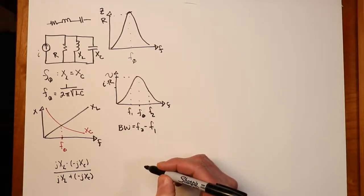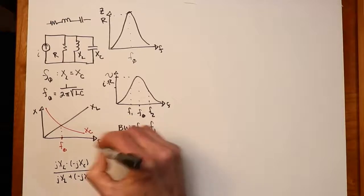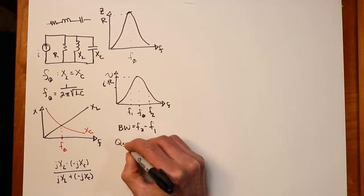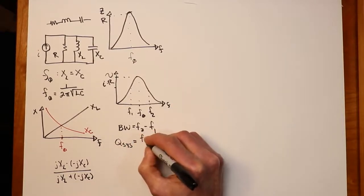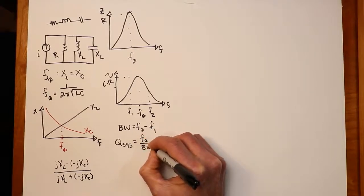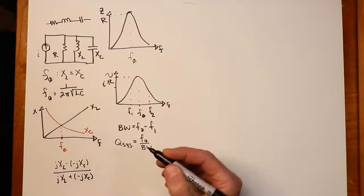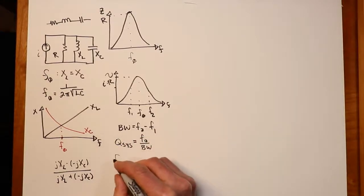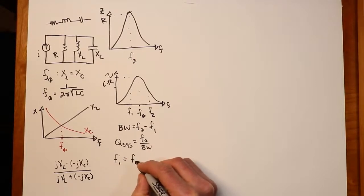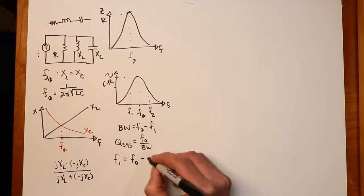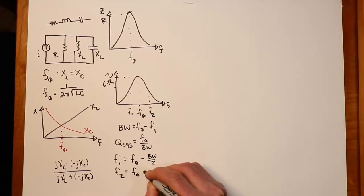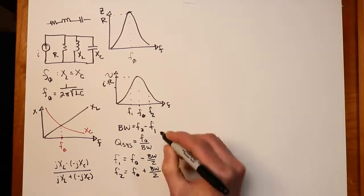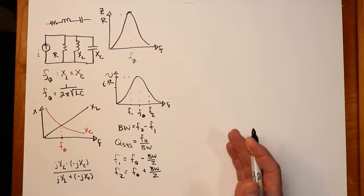We would still refer to the Q of the system in terms of the F0 and the bandwidth. And it would still be true that we could approximate, again, at least for high Q, F1 as being F0 minus the bandwidth splitting in half, half on either side, and F2 as being F0 plus that same piece. So this is true for high Q stuff. Same exact thing that we saw in series.